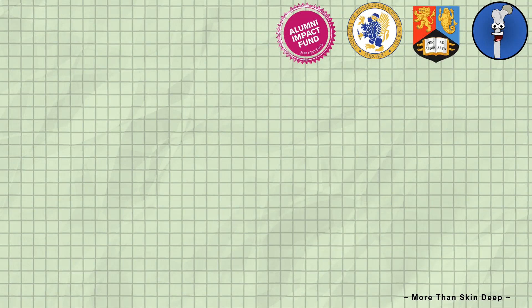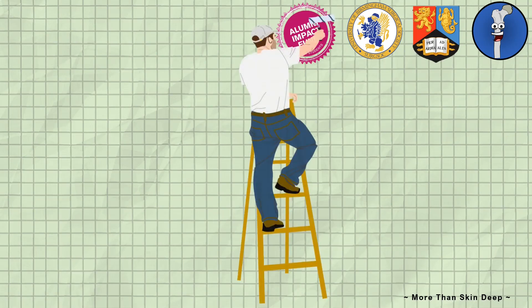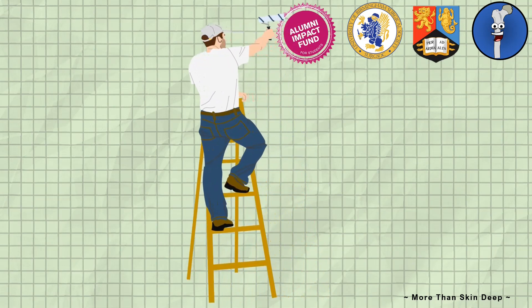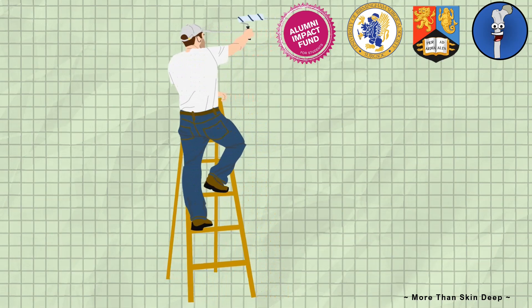Dave is a 27-year-old painter and decorator who was standing on a ladder when he slipped and fell to the hard ground below. He unfortunately landed directly on his outstretched right hand, damaging it badly.